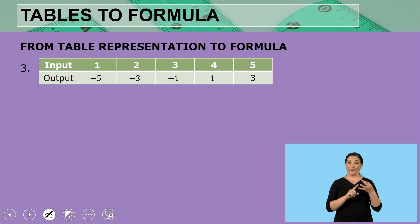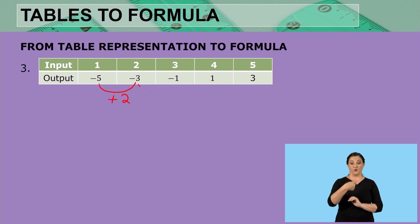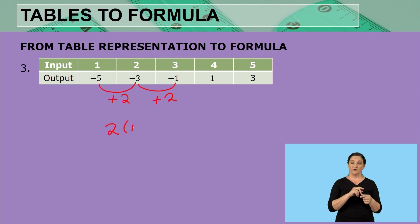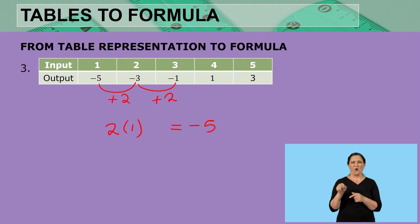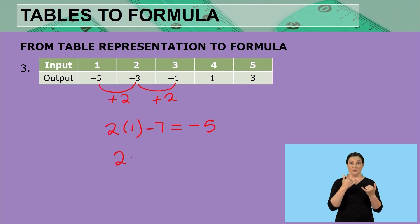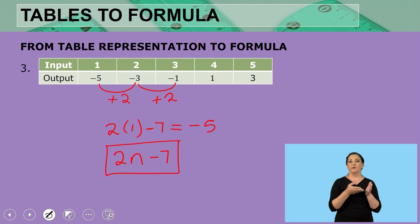What about the third one? From negative 5 to negative 3 we are adding 2, and from negative 3 to negative 1 we are again adding 2. So we are going to take the input, multiply it by 2, and add or subtract so the answer gives us negative 5. 2 multiplied by 1 is 2 — how do we get to negative 5? We subtract 7. So the rule is 2n minus 7.